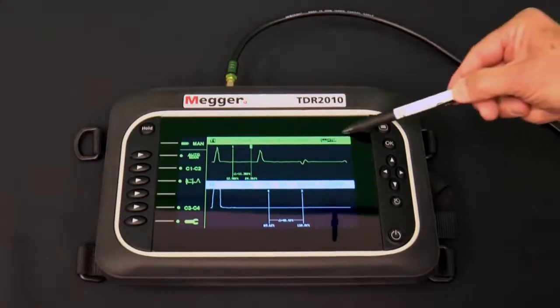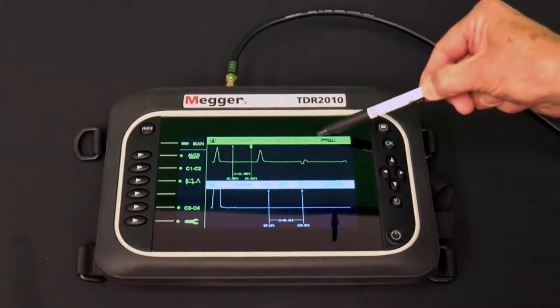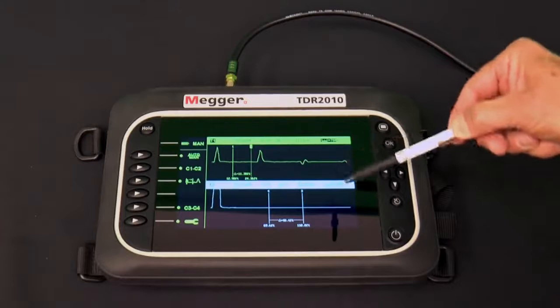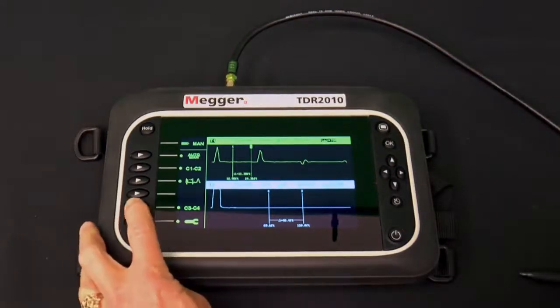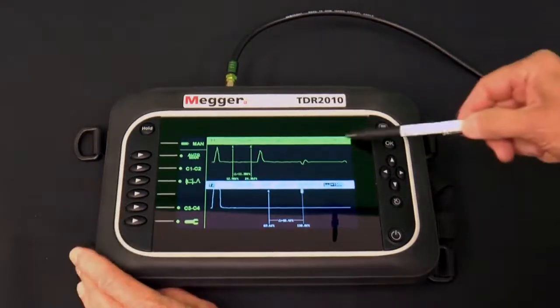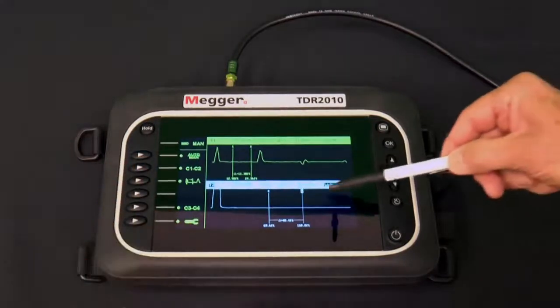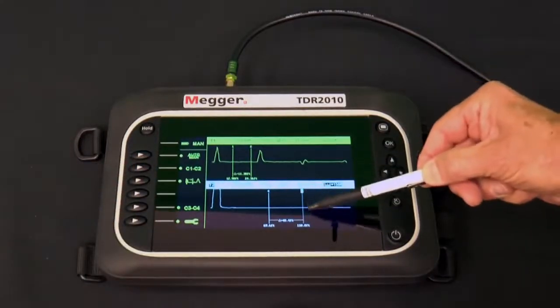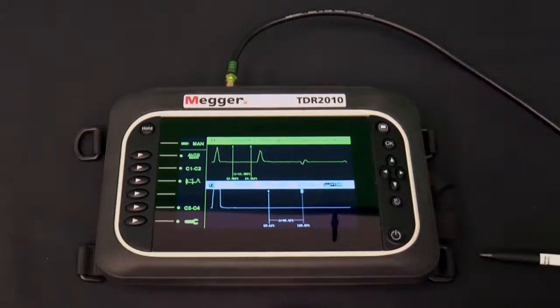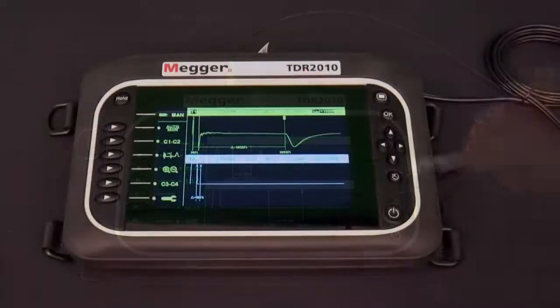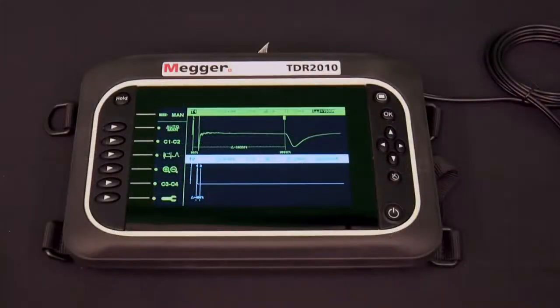Notice also that the distance shown on the screen, upper right above the trace, is highlighted. If we press the soft key next to the C3C4 icon, one of the cursors on the bottom trace, the T2 trace, goes from solid to dashed. The distance shown on the screen for that trace is now highlighted.